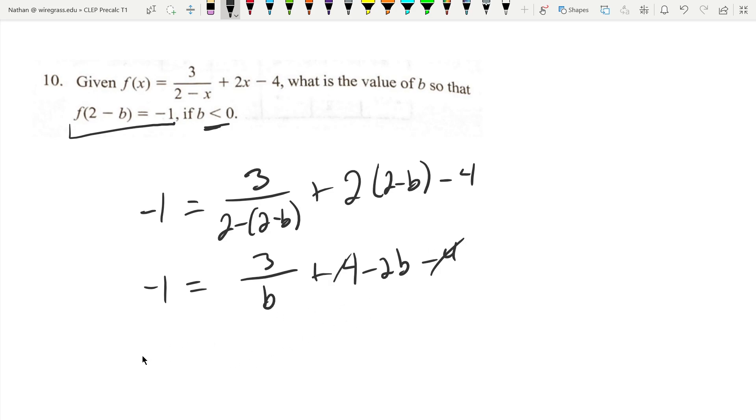And now I'm going to multiply everything through by b. That's going to give me minus b equals 3 minus 2b squared.